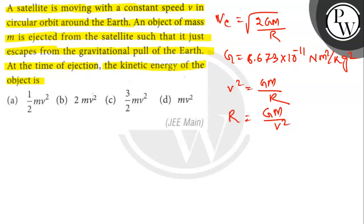Now put the value of r into the escape velocity equation. So here we get VE is equal to root of 2GM divided by GM by v². So that will be v root 2.